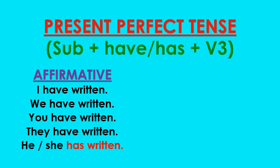In case of affirmative sentences, the subject comes first, followed by 'have' and the third form of the verb. For first person singular: 'I have written.' First person plural: 'We have written.' Second person: 'You have written.' Third person plural: 'They have written.' But in case of third person singular — he or she — we use 'has,' not 'have.' So the third person singular always takes 'has' followed by the third form of the verb: 'written.'